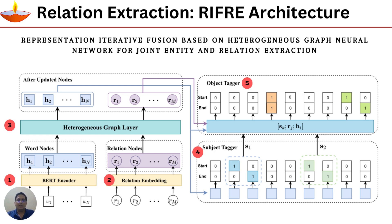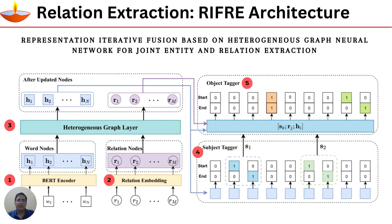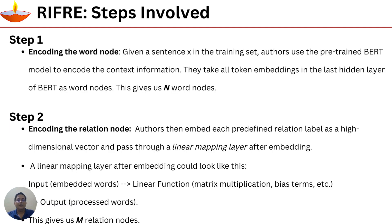At a high level the paper talks about an architecture with five very important steps. I'm going to talk about each of these steps in the coming slides, and I will keep visiting that specific slide where I refer to each step and then discuss them in detail individually. The first step is encoding the word node.